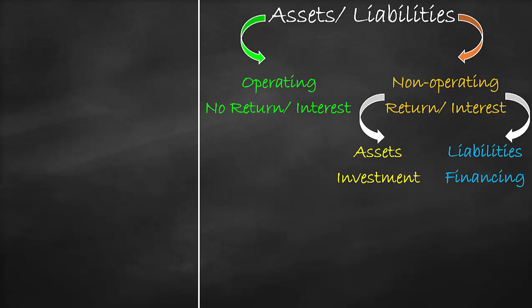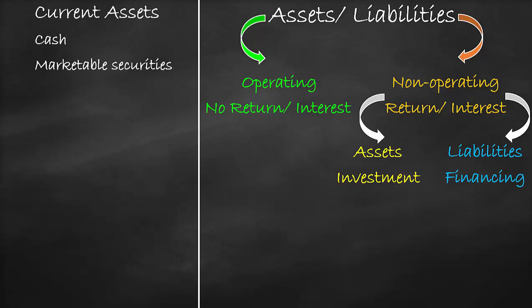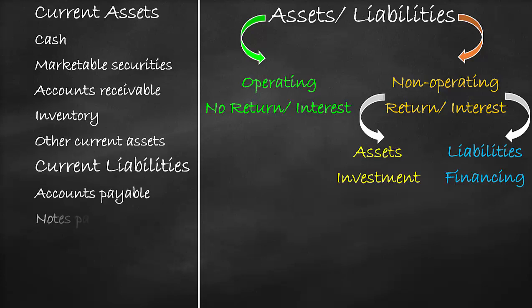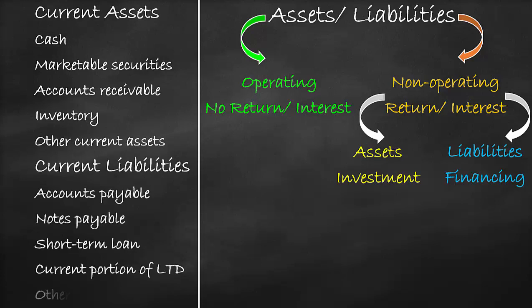Let's apply this concept to the current assets and current liabilities as an example. We have current asset items of cash, marketable securities, accounts receivables, inventory, and other current assets. We have current liability items of accounts payables, notes payables, short-term loans, current portion of long-term debt, and other current liabilities.